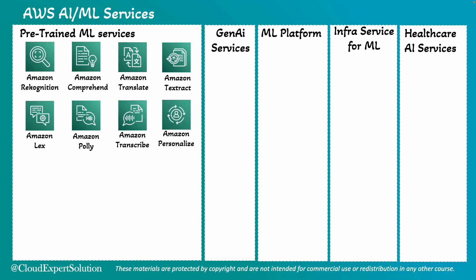Amazon Personalize can provide real-time personalization and recommendations. For example, Netflix uses Amazon Personalize to recommend movies and shows based on user preferences. Amazon Forecast can be used for time series forecasting. A retail company can use Amazon Forecast to predict product demand and manage inventory.